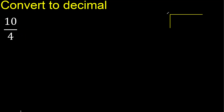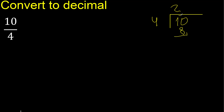10 divided by 4. 10 is not less than 4. 4 multiply by which number is nearest to 10 but not greater? Multiply by 3 is 12 — 12 is greater. Multiply by 2 is 8 — 8 is not greater. Subtract 2. There is no number that goes down, therefore complete.